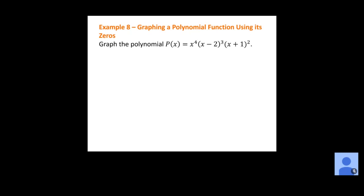Good — if we can find the degree of the polynomial and the leading coefficient, then we can talk about the end behavior. And we're also going to look for x-intercepts. So those are the two things we need: the degree, the leading coefficient to give us end behavior, and then the x-intercepts.